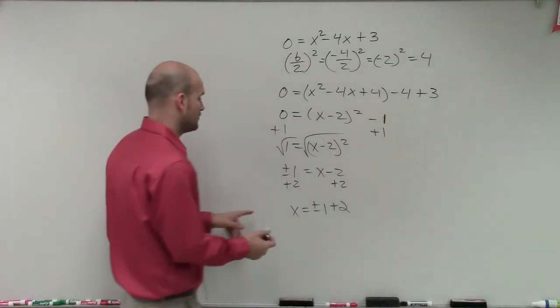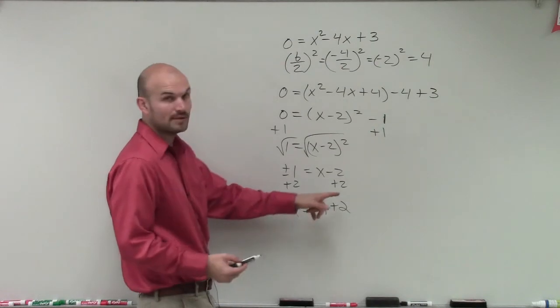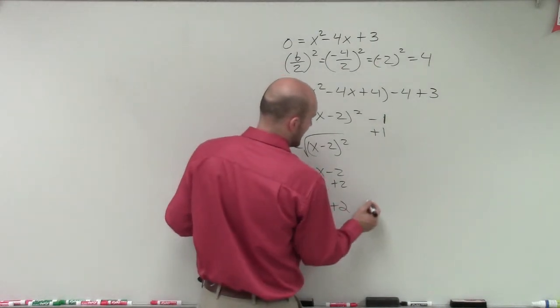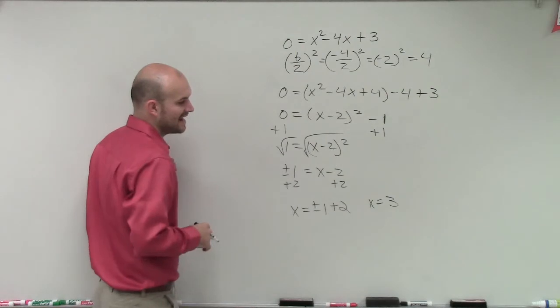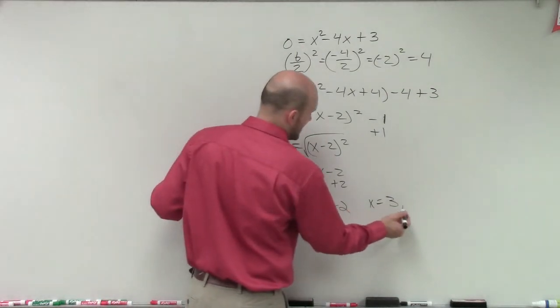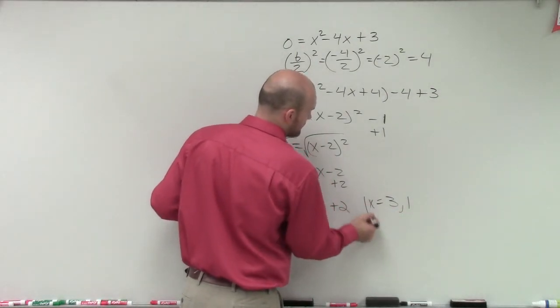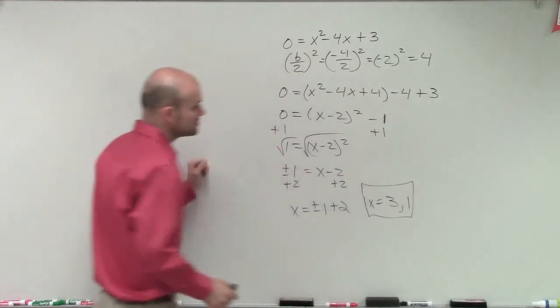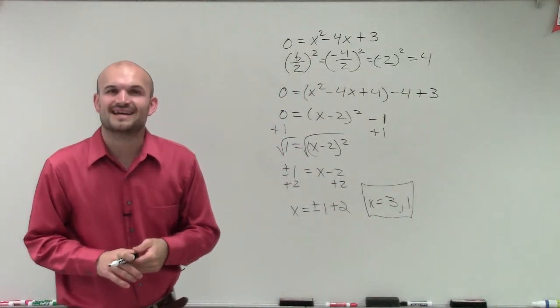So we solve this two ways. First, positive 1 plus 2, so x equals 3. Second, negative 1 plus 2, so x equals 1. Therefore, those are your two solutions by completing the square. Thanks.